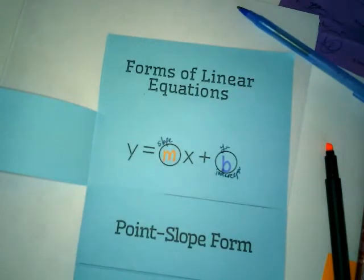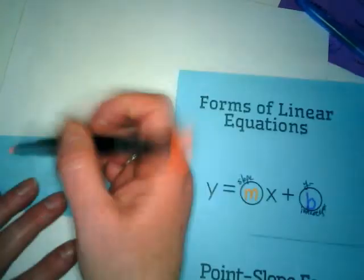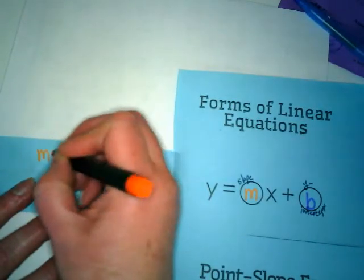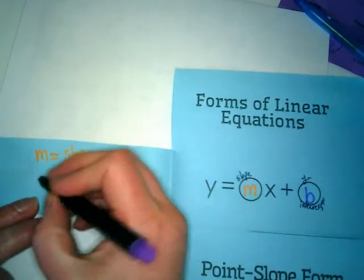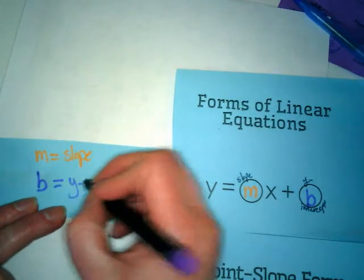We are color-coding on purpose. So on the left, I would like you guys to show that M is equal to slope. And the B in this equation is equal to the y-intercept.